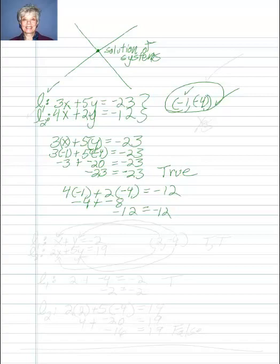That means that negative 1 comma negative 4 is also on line 2. The only way a point can be on both line 1 and line 2 is if the two lines are laying on each other, or if they cross at one point, and this is the point at which they cross. So yes, the answer to this is yes.